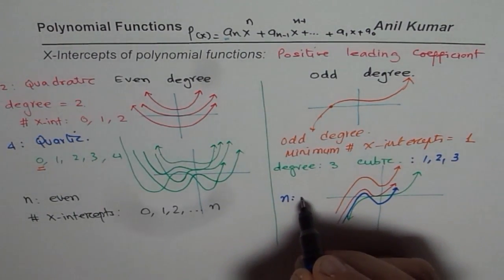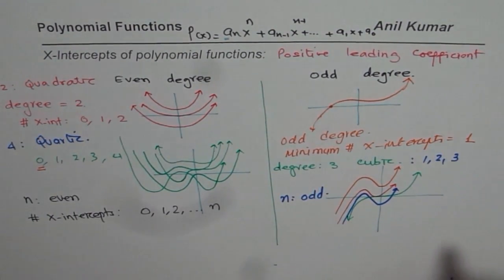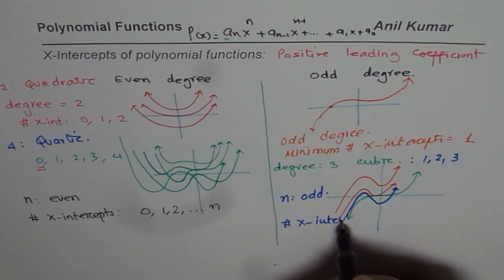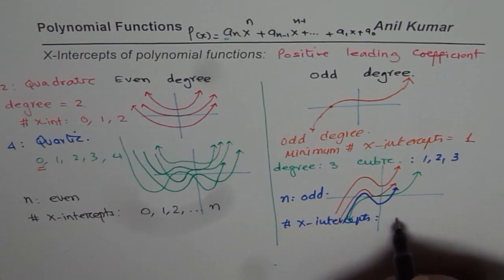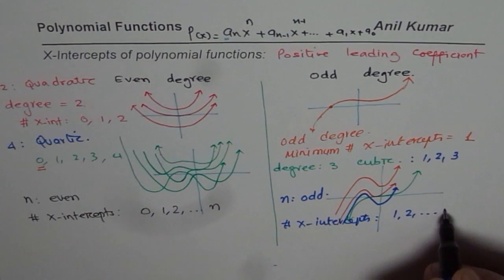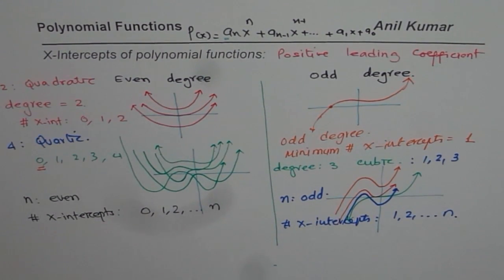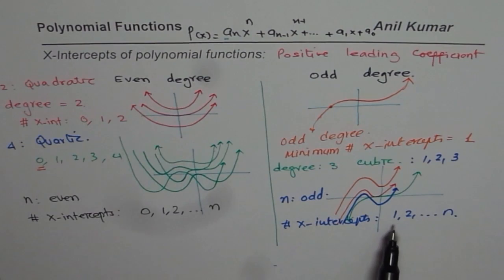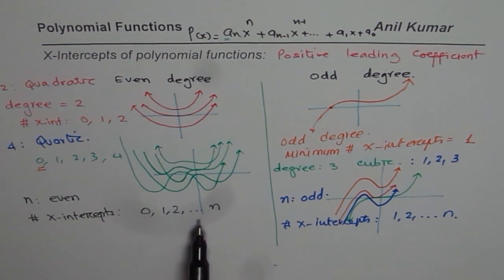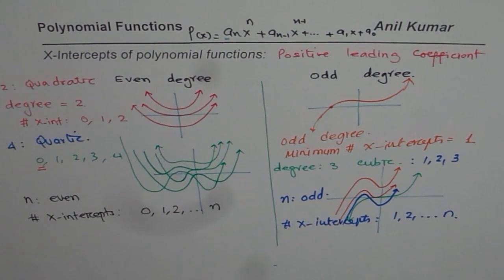In general, if the degree n is odd, the number of x-intercepts ranges from a minimum of 1 up to n, the degree. So number of x-intercepts for an odd degree polynomial is anywhere between 1 to n, and for even degree, anywhere between 0 to n. That is very important to remember. I hope that helps. Thank you, and all the best.